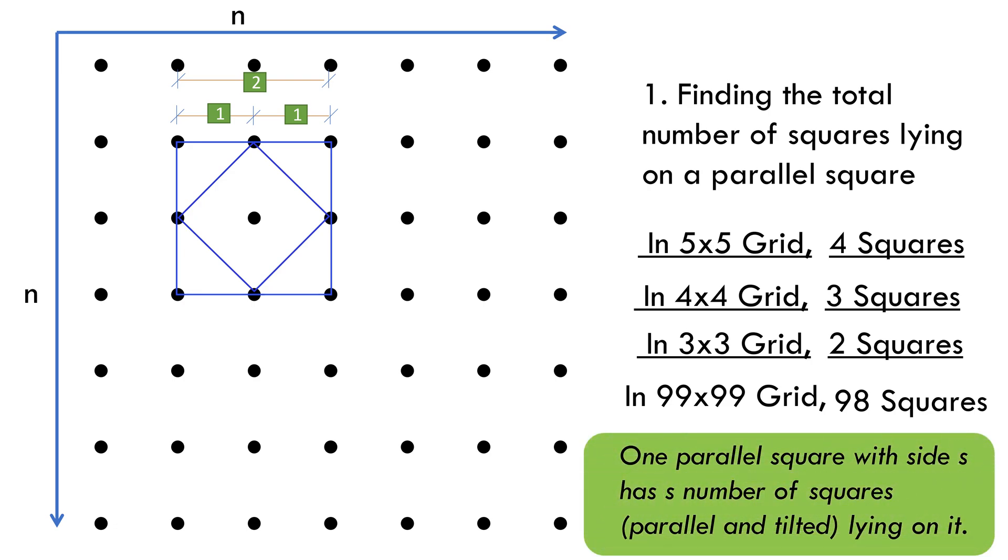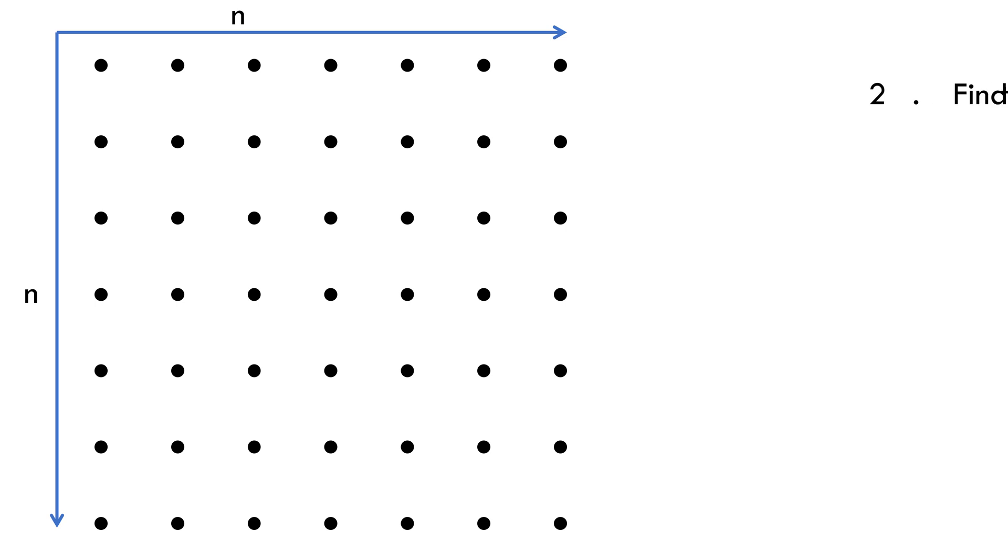Now, for second step. Our task is to find the total number of parallel squares in a given n by n grid. That is, 1 by 1 grid, 2 by 2 grid, 3 by 3 grid, 4 by 4 grid, and so on.